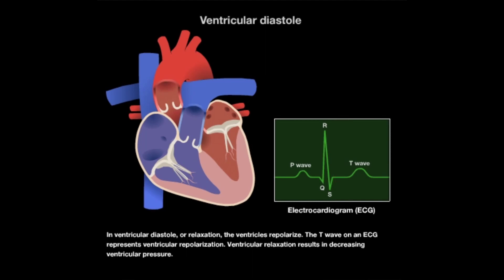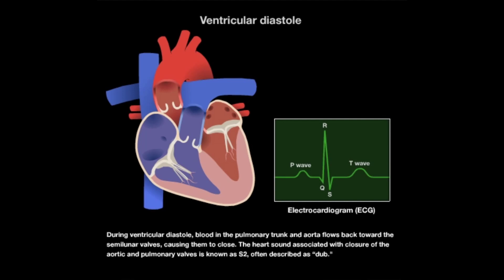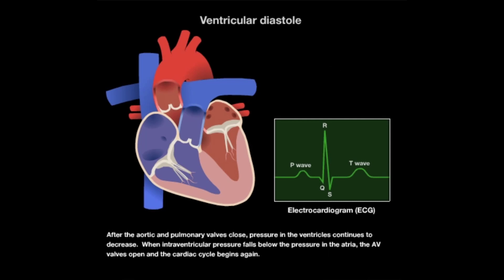In ventricular diastole, or relaxation, the ventricles repolarize. The T wave on an ECG represents ventricular repolarization. Ventricular relaxation results in decreasing ventricular pressure. During ventricular diastole, blood in the pulmonary trunk and aorta flows back toward the semilunar valves, causing them to close. The heart sound associated with closure of the aortic and pulmonary valves is known as S2, often described as DUB. After the aortic and pulmonary valves close, pressure in the ventricles continues to decrease. When intraventricular pressure falls below the pressure in the atria, the AV valves open and the cardiac cycle begins again.